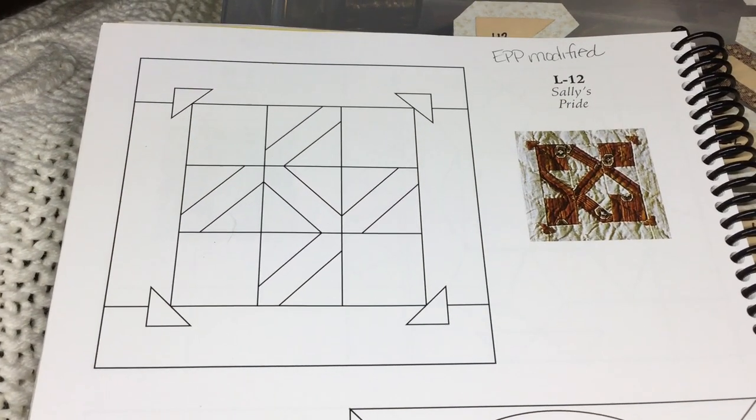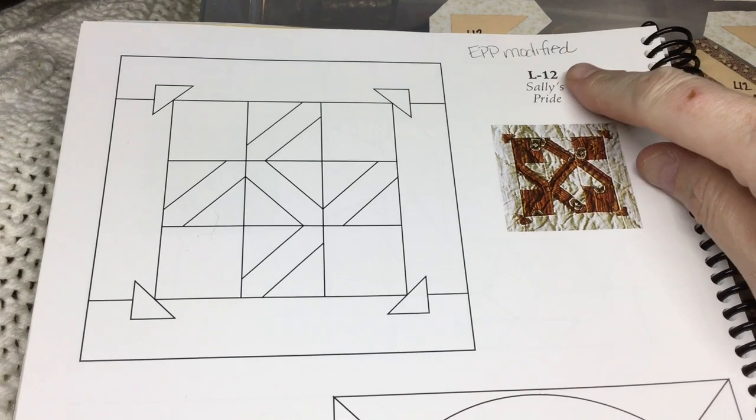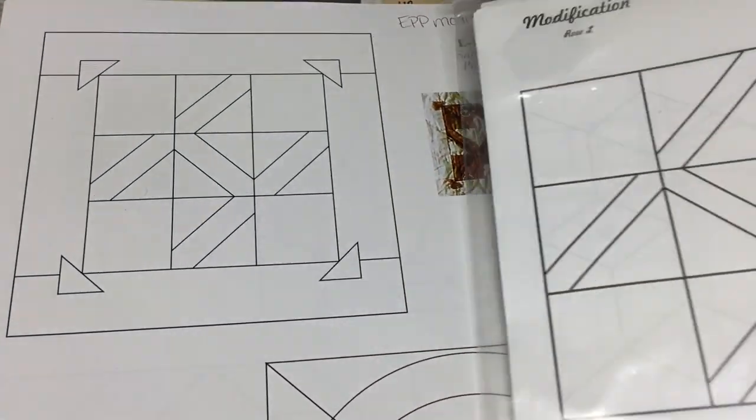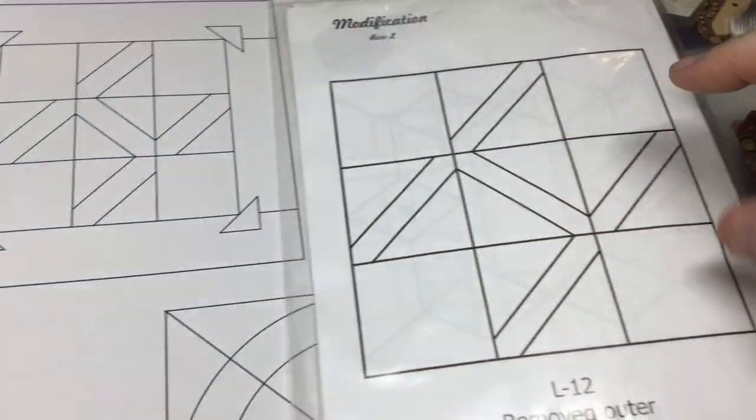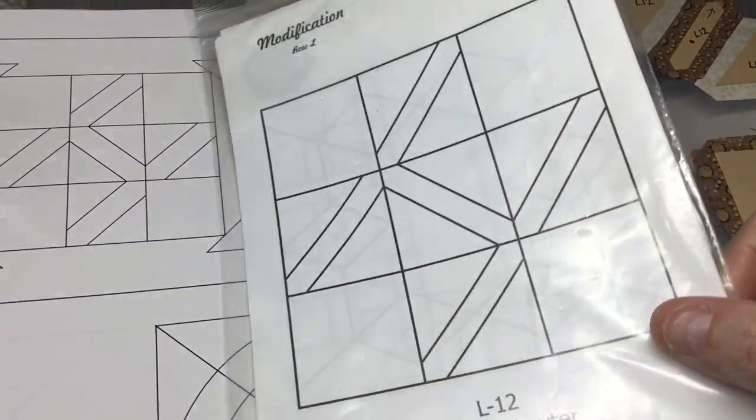Next block is L12. L12 is a modified block, so I'm going to go to the booklet here. They have taken the center section and expanded it to be the entire block. So I have my block set up here.